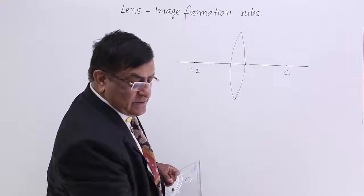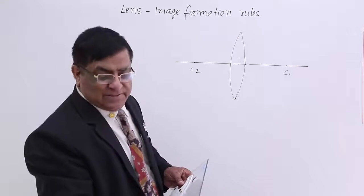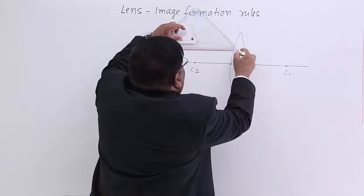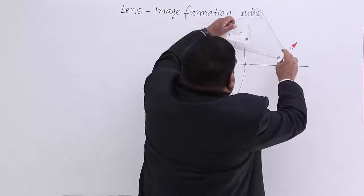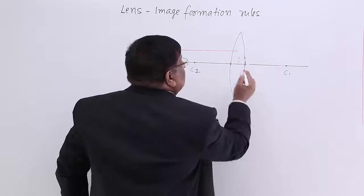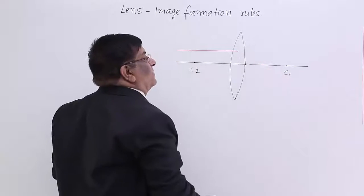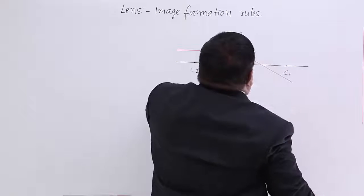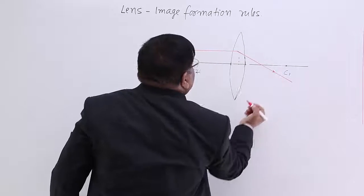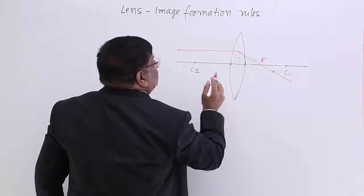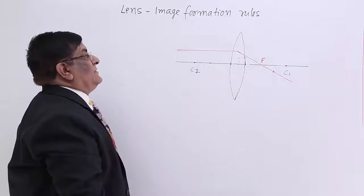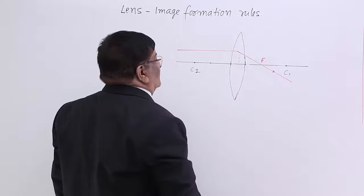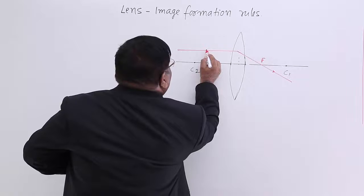Now if there is a ray which is parallel to the principal axis, then after refraction this will pass through focus. It will pass through a particular point on the principal axis and this point we will call as focus. This is focus. There are two focus of a lens as we have done in the previous lecture.